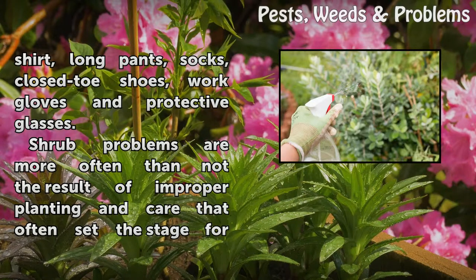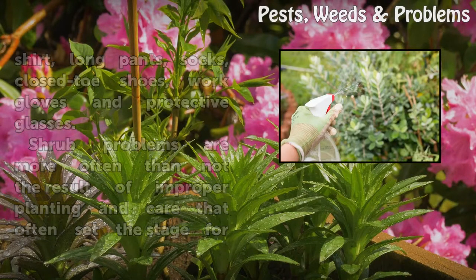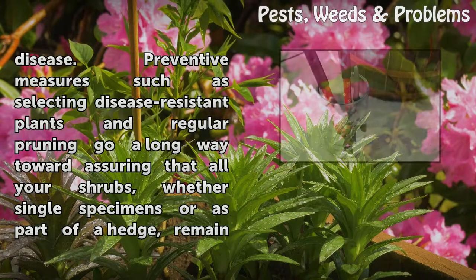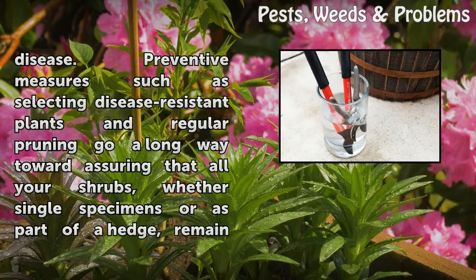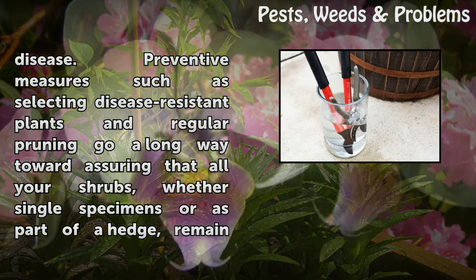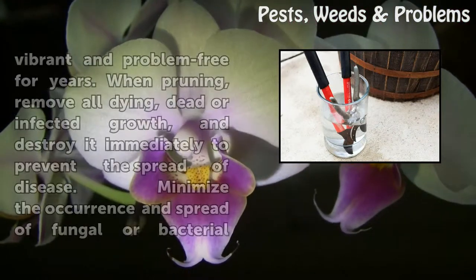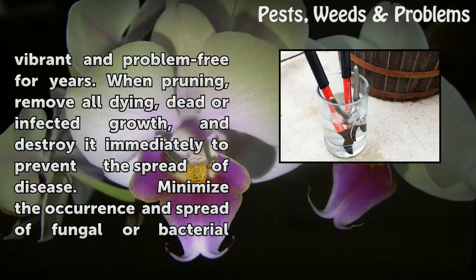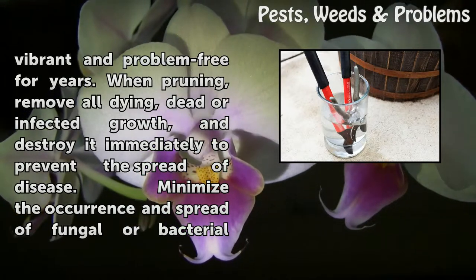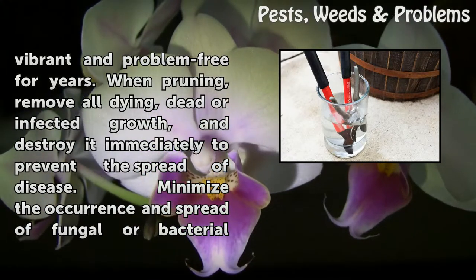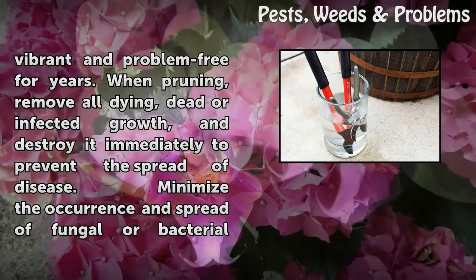Shrub problems are more often than not the result of improper planting and care that often set the stage for disease. Preventive measures such as selecting disease-resistant plants and regular pruning go a long way toward assuring that all your shrubs, whether single specimens or as part of a hedge, remain vibrant and problem-free for years. When pruning, remove all dying, dead, or infected growth and destroy it immediately to prevent the spread of disease.